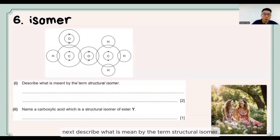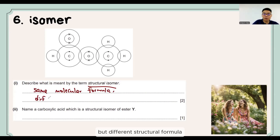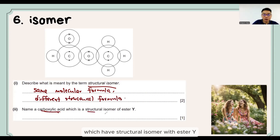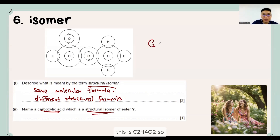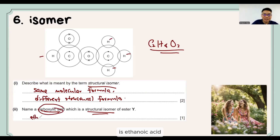Next question: describe what is meant by the term structural isomer. They have the same molecular formula but different structural formulas. Then, name a carboxylic acid which is a structural isomer with ester Y. The molecular formula is C2H4O2, so the carboxylic acid with this molecular formula is ethanoic acid.